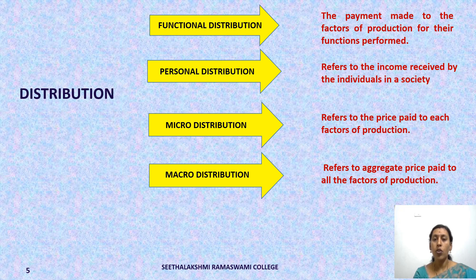Personal distribution refers to the income received by individuals in a society, also called per capita income, which is calculated as national income divided by population. Micro distribution refers to the price paid to each factor of production — that is, rent, wages, interest, and profit respectively. Macro distribution refers to the aggregate price paid to all the factors of production, such as total profit, total wages, total interest, etc.